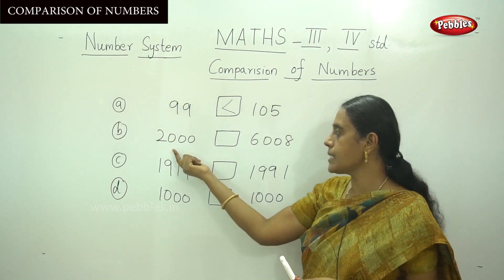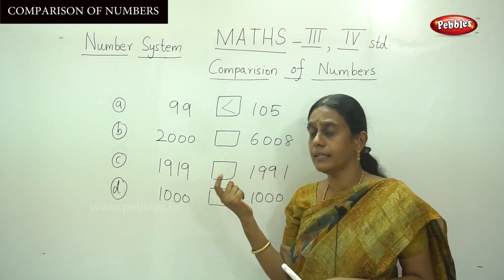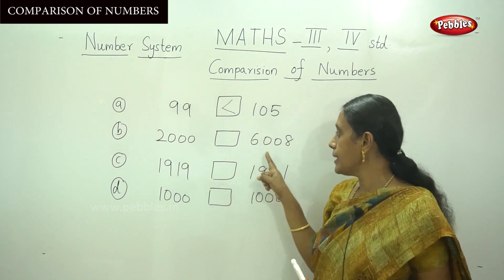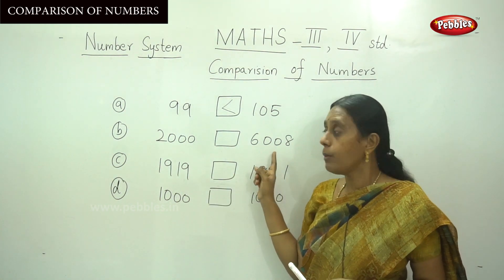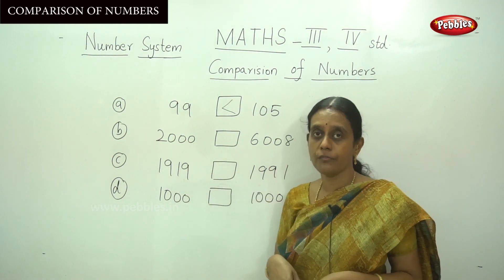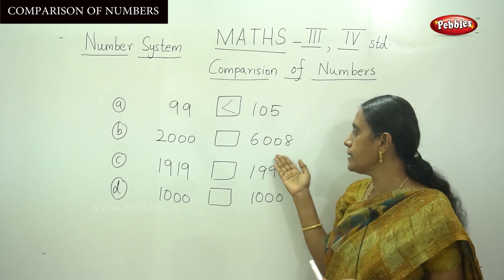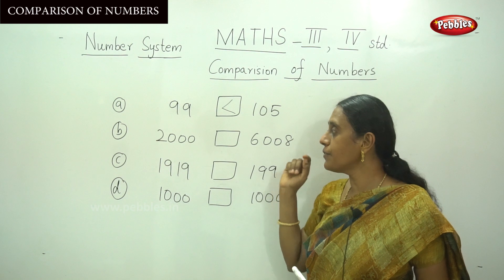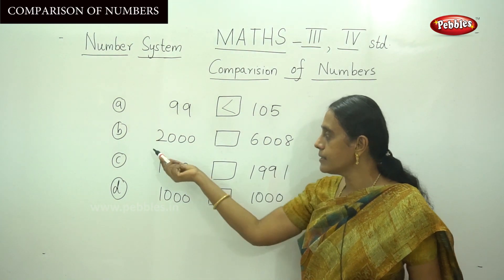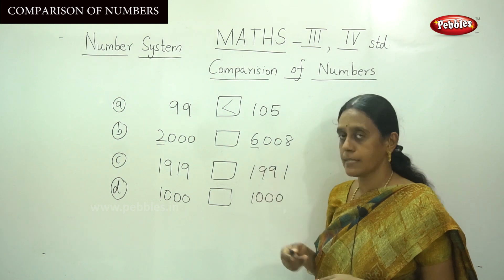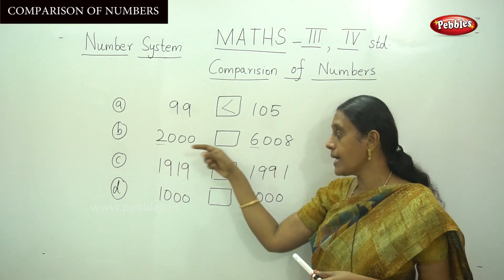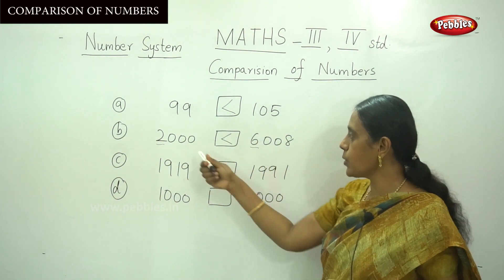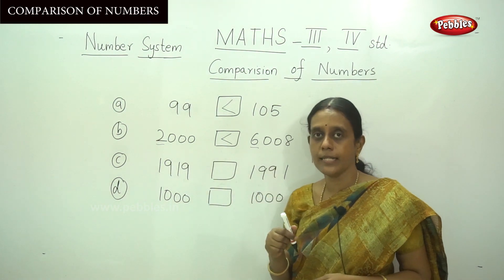Observe this next example. First, read the number: this is 2000 and here is 6008. Both numbers have the same number of digits — four digits each. Now observe the first digit: here this is 2 and here this is 6. Since 2 is less than 6, put the lesser sign. So 2000 is lesser than 6008.